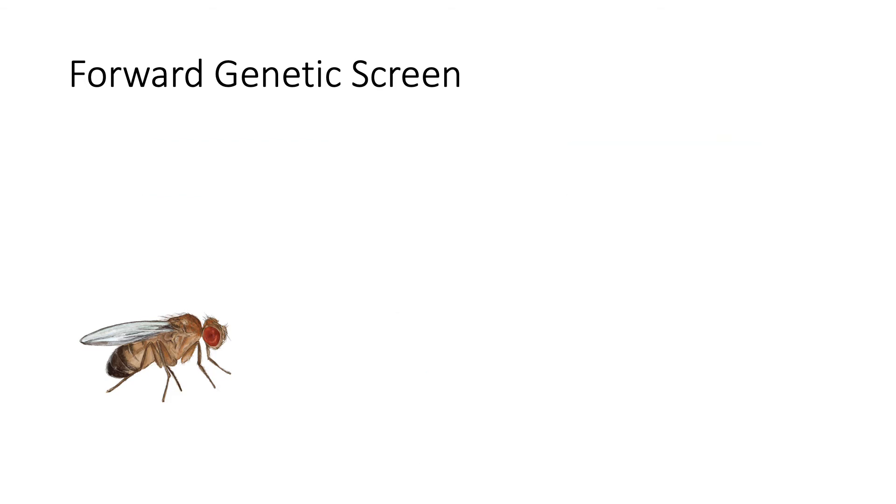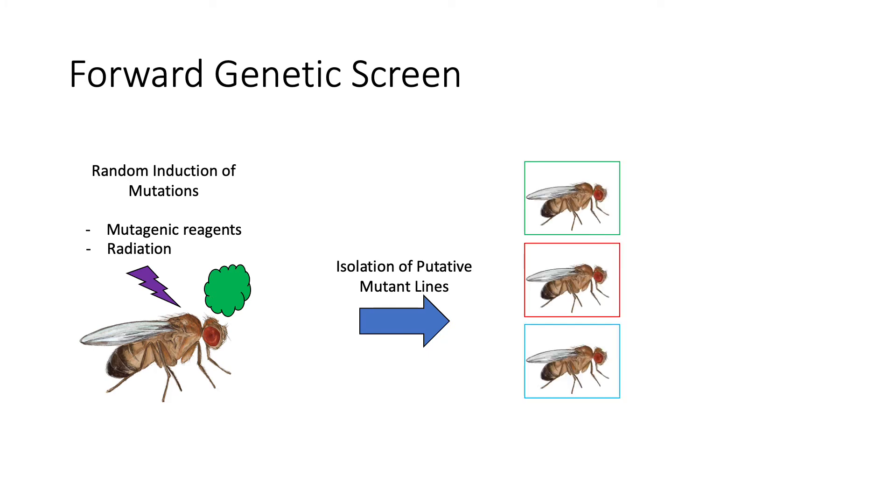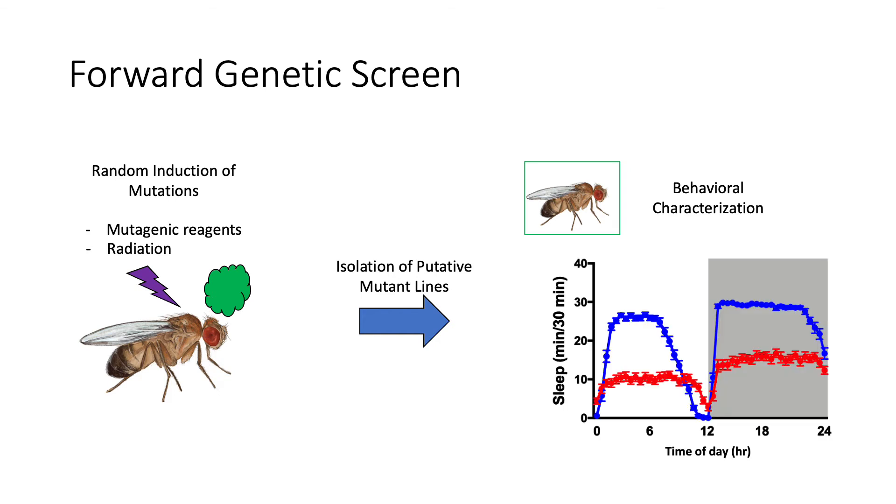You may be wondering, how do you disrupt the function of genes? Well, this is done by randomly inducing mutations in different genes, which is achieved by exposing the organism, in this case the flies, to either mutagenic reagents or radiation. After the animals have been exposed to the mutagenic process, lines of putative mutants are isolated. These lines are then characterized for behavior until one is found where the desired disrupted behavior is observed. In the case of our example, a decrease in the amount of sleep.